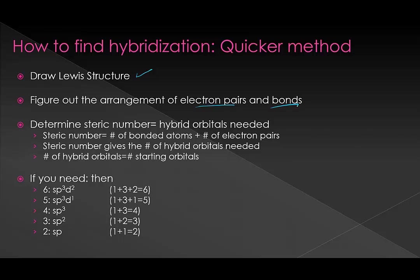Remember that each atom has its own hybridization. From the Lewis structure, you're going to determine your steric number. Your steric number is how many bonded atoms you have — not how many bonds, but how many bonded atoms — plus your number of lone pairs. This tells you how many hybrid orbitals you need. Once you find your steric number, you know how many hybrid orbitals you need and you can match it up.